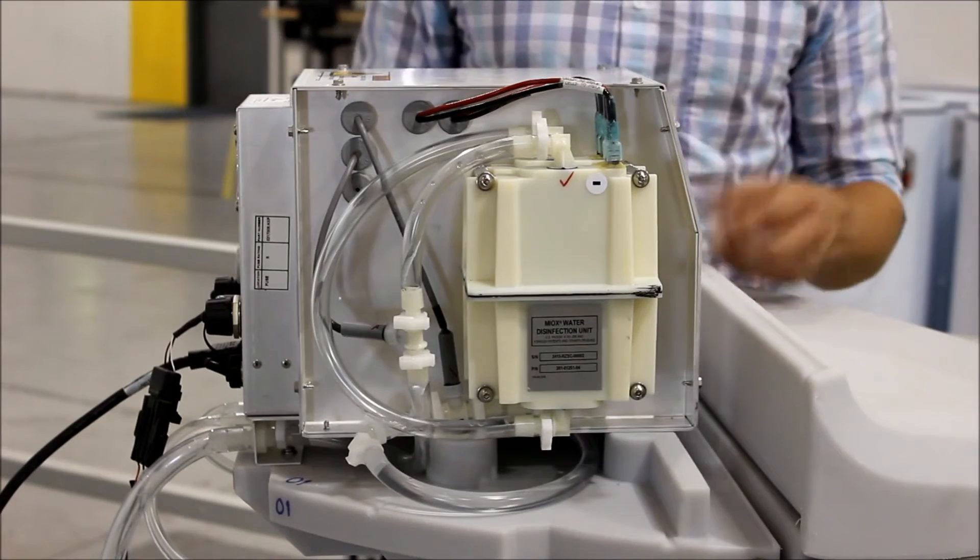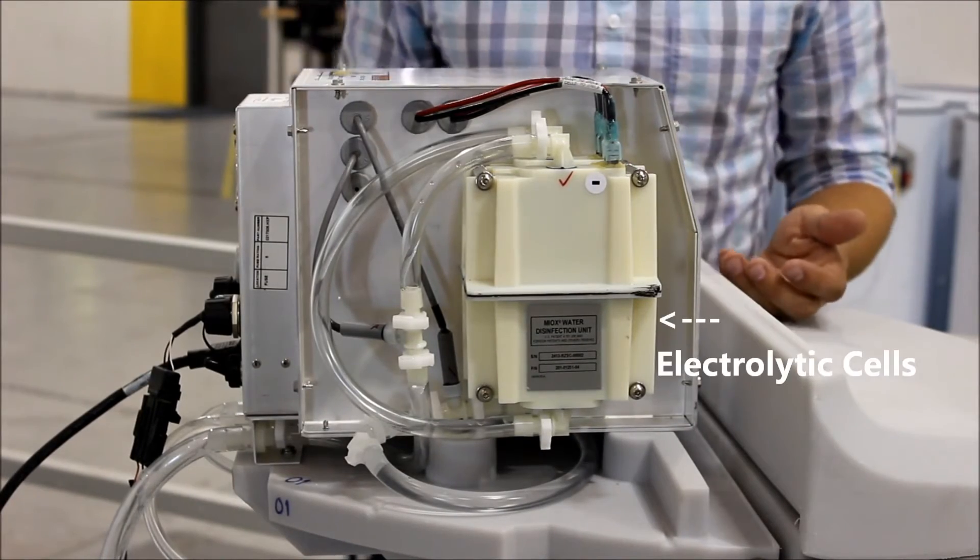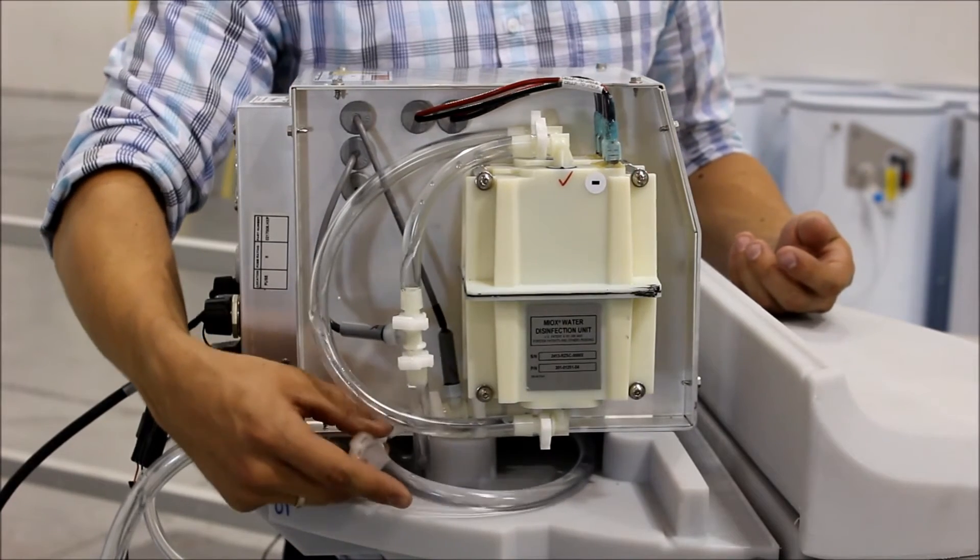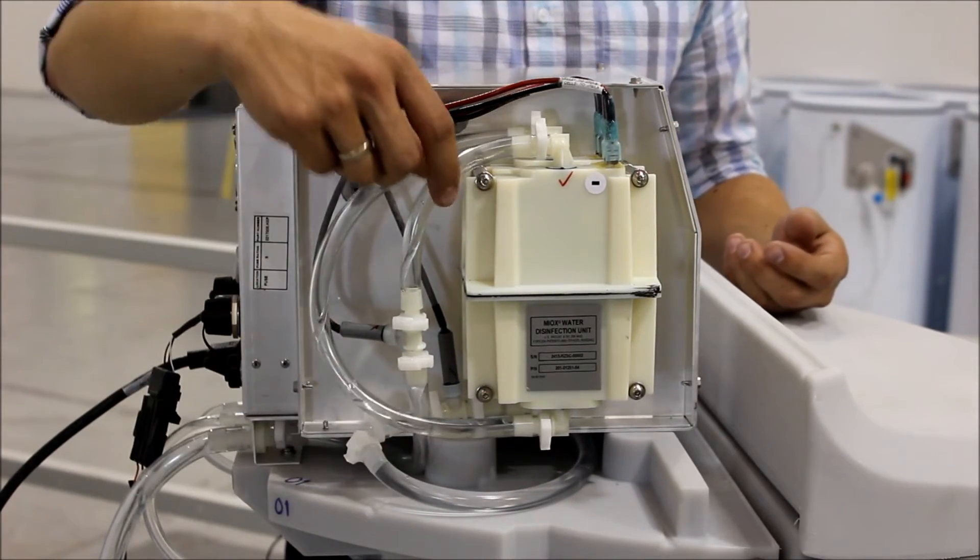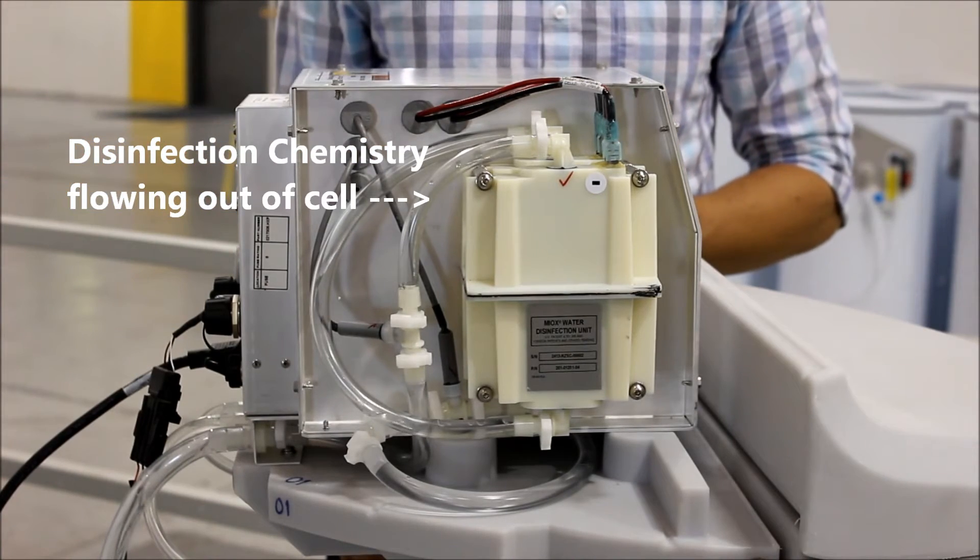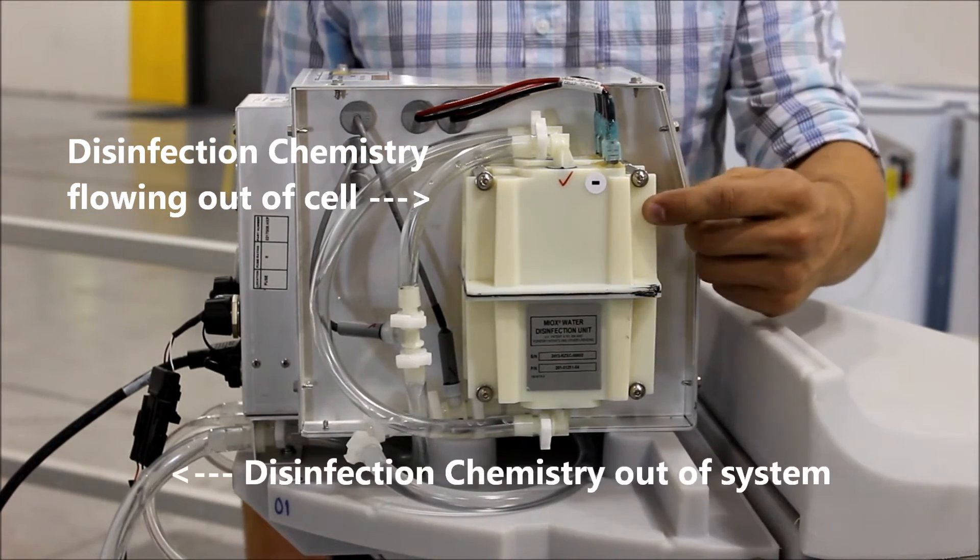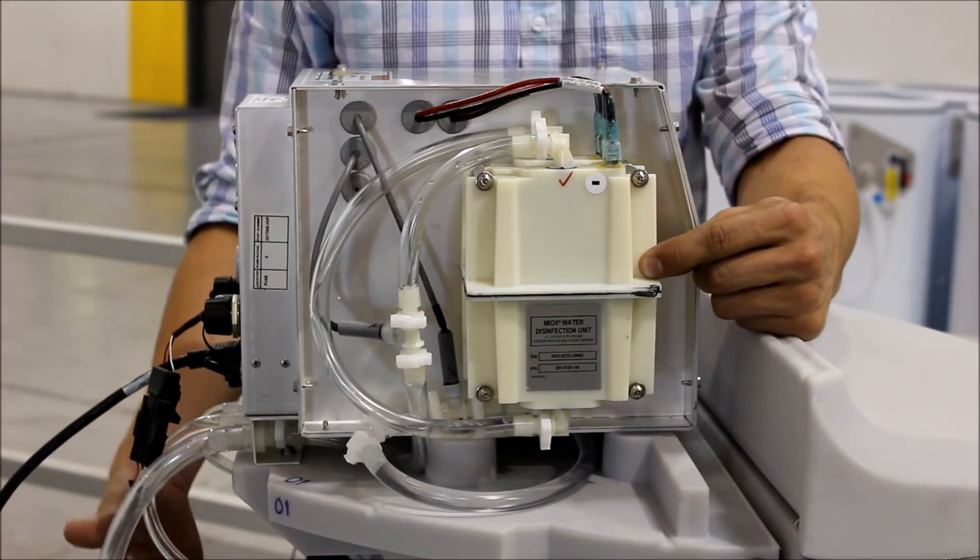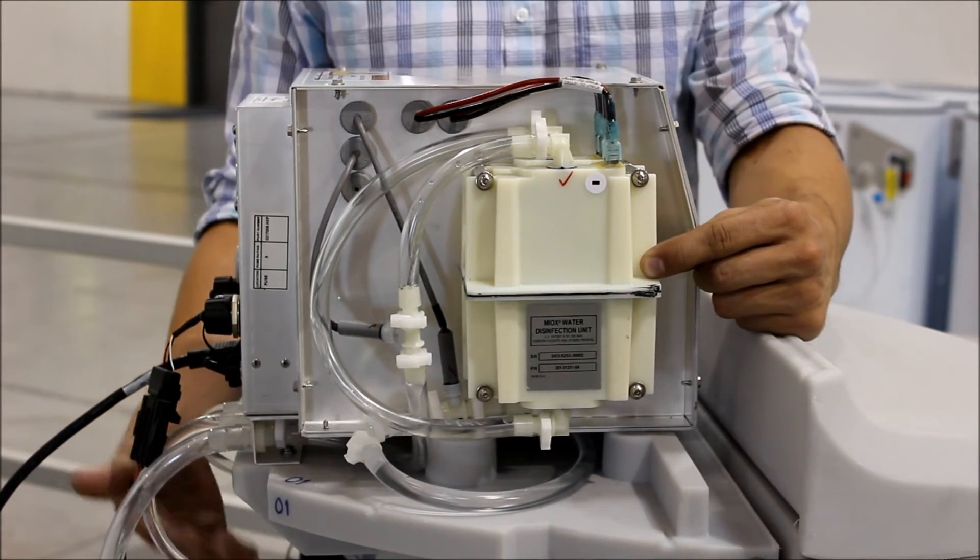The MYOX electrolytic cells, which are the heart of any on-site generator, are located here and here. They convert a water brine mixture which comes into this tube to a disinfection chemistry coming out of this tube, where it's passed into a storage tank for later use. What's happening inside these cells is an electrolysis process which passes a current through the water brine mixture and produces the disinfection chemistry.